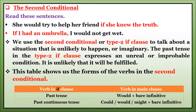Now the second conditional — also called type 2 conditional, type 2 if clause, or the second conditional. Read these sentences: 'She would try to help her friend if she knew the truth.' 'If I had an umbrella, I would not get wet.' We use the second conditional or type 2 if clause to talk about a situation that is unlikely to happen or imaginary.